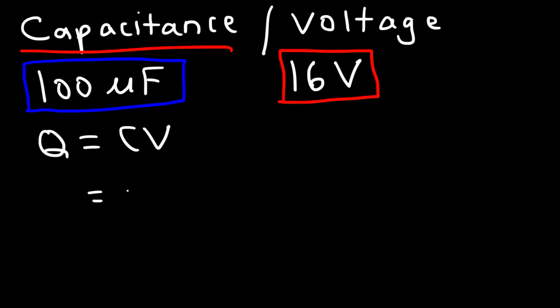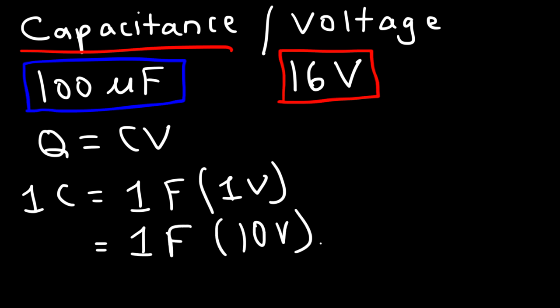Let's say if we have a one farad capacitor and we apply one volt to it, we can store one coulomb of charge. Likewise if we increase the voltage, let's say we apply a 10 volt battery across a one farad capacitor, we can store 10 coulombs of charge. So with the same capacitor you can store more charge if you increase the voltage applied to it.